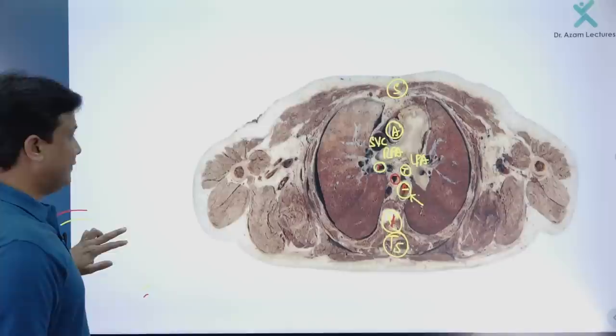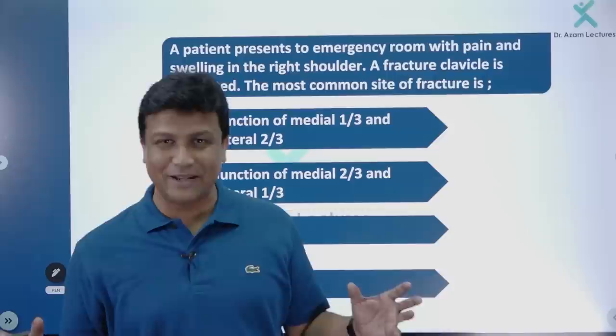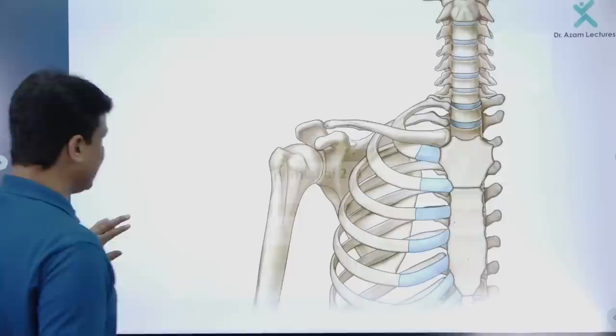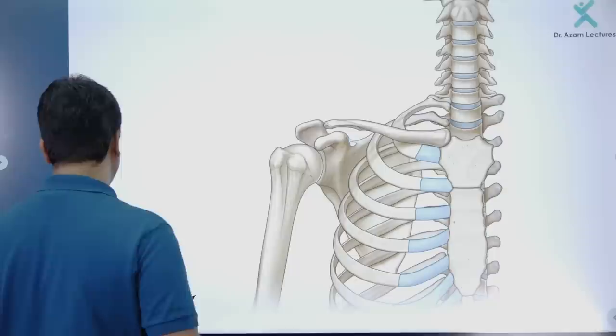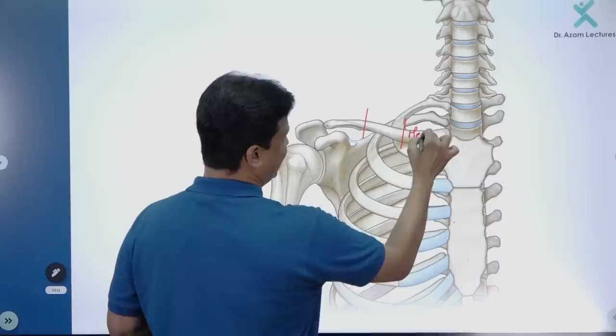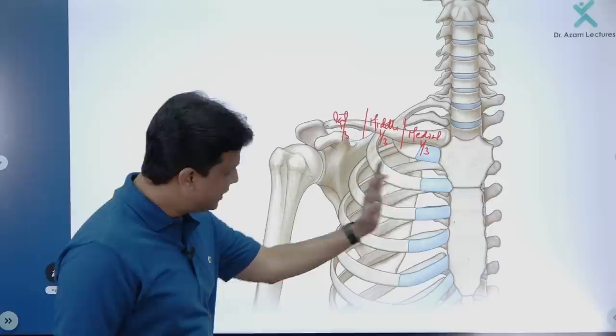Next question: a patient presents with pain and swelling in the right shoulder — fracture of the clavicle is suspected. What is the most common site of fracture? The clavicle (collar bone) is divided into three parts: medial one-third, middle one-third, and lateral one-third.